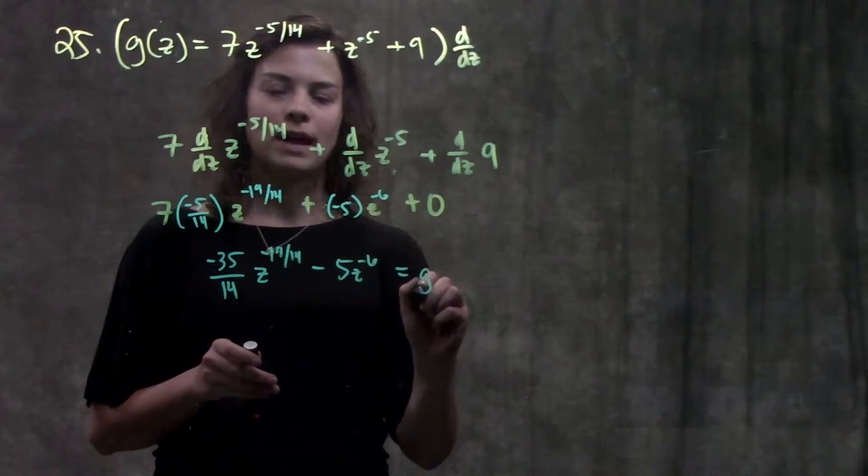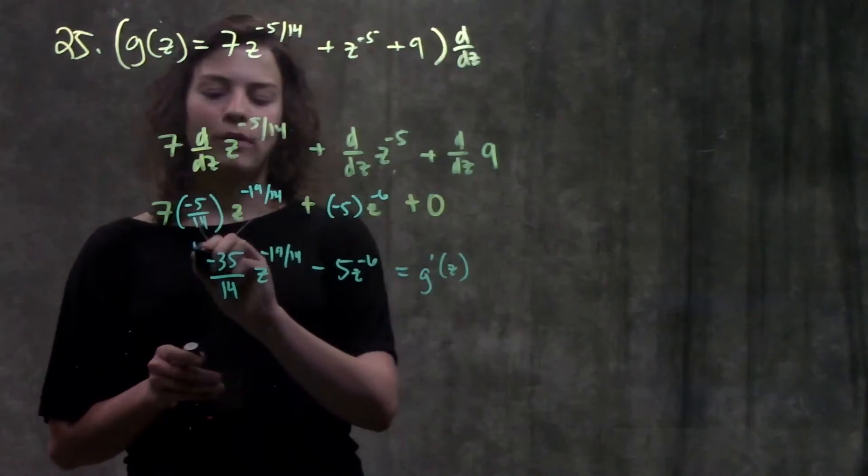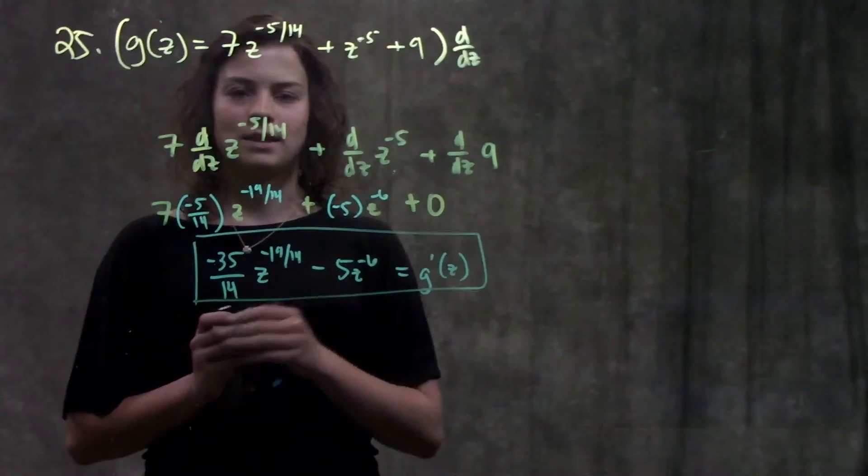Nothing else I can simplify. So that's it for this problem. The derivative of g of z is this function.